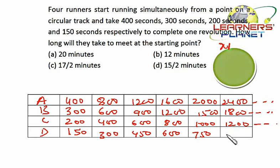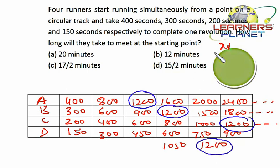Now you'll observe after every 1200 seconds, A, B, C, and D, all of them are reaching at the same position. That means they'll be meeting once again at the starting point.